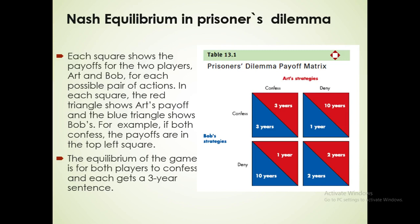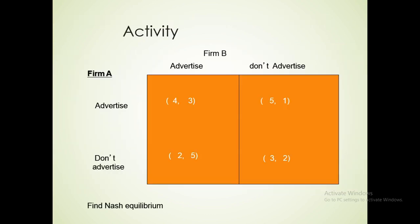This is the best option for both. So the Nash equilibrium of the game is for both players to confess, and each receives a 3-year sentence.